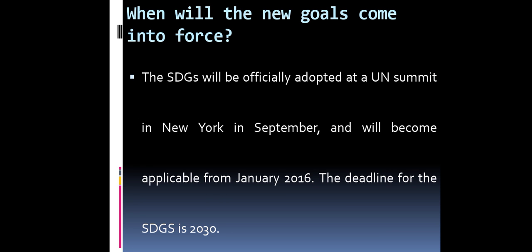When will the new goals come into force? The SDGs were officially adopted at a UN summit in New York in September and became applicable from January 2016. The deadline for the SDGs is 2030.